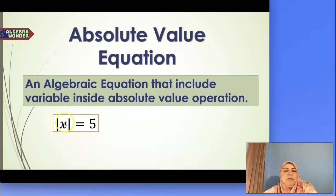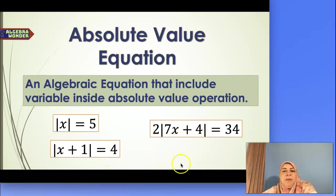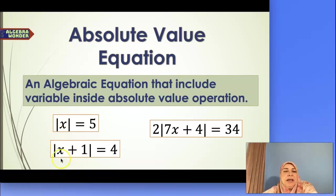So here we go. We have the absolute value operation and we have a variable inside. So here are some examples: absolute value of x equals 5, or absolute value of x plus 1 equals 4, or even a multi-step one like 2 times absolute value of 7x plus 4 equals 34. So any equation that has a variable inside the absolute value will be an absolute value equation.